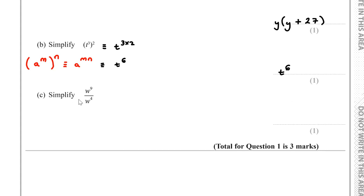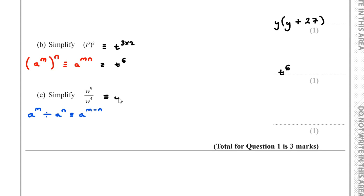For part C, we have to simplify w to the power of 9 divided by w to the power of 4. When we have the same base number and we are dividing, we subtract the powers: a to the power of m divided by a to the power of n equals a to the power of m minus n. So w to the 9 divided by w to the 4 equals w to the power of 9 minus 4, which is w to the power of 5.